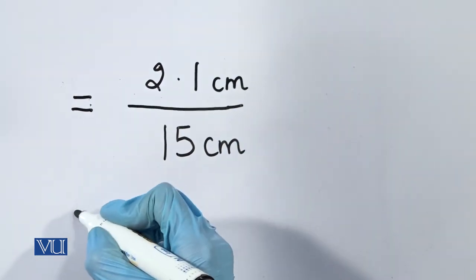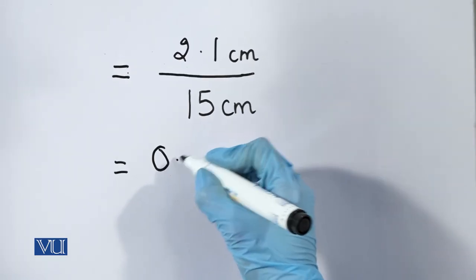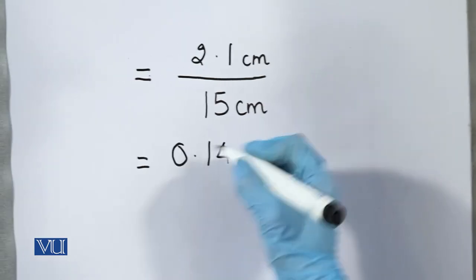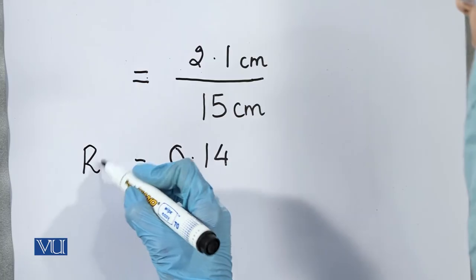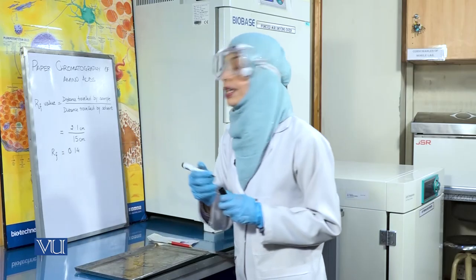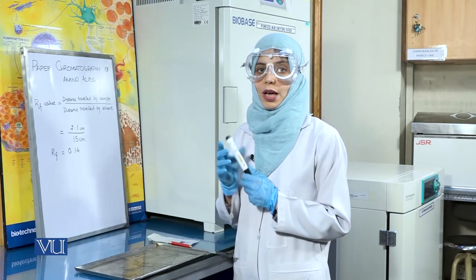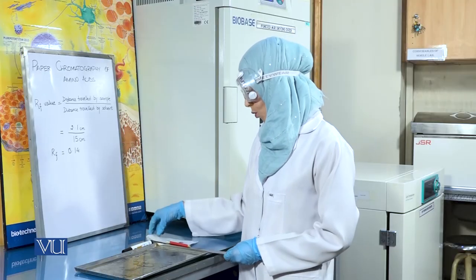Hence, the RF value comes out to be 0.14, which is the RF value for the amino acid lysine. Therefore, we can identify that our sample contained the amino acid lysine.